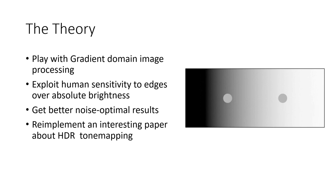The first theoretical reason is that the human visual system is much more sensitive to edges between objects than to absolute brightness. For example, on the right I have a pretty common optical illusion where the two dots are actually the same absolute brightness, but because of their surroundings, we perceive the right dot to be significantly darker than the left dot. And this can be exploited to produce better tone-mapped HDR images on limited dynamic range displays.